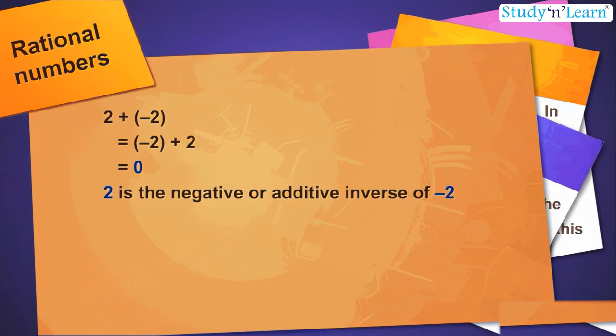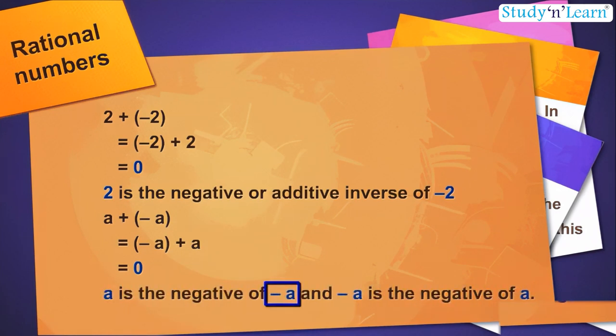In general, for an integer a, we have a plus minus a is equal to minus a plus a is equal to 0. So a is the negative of minus a and minus a is the negative of a.